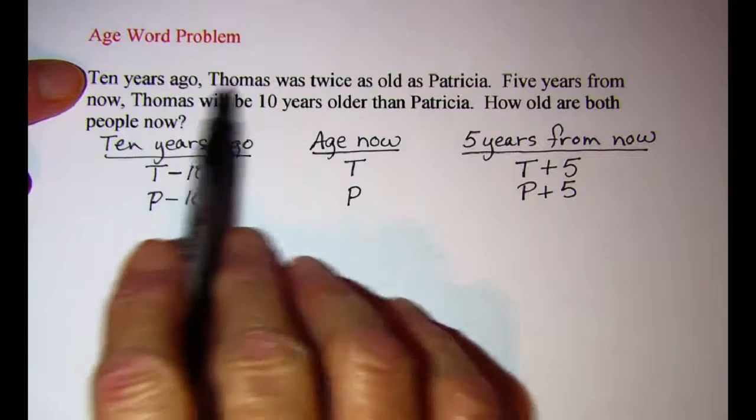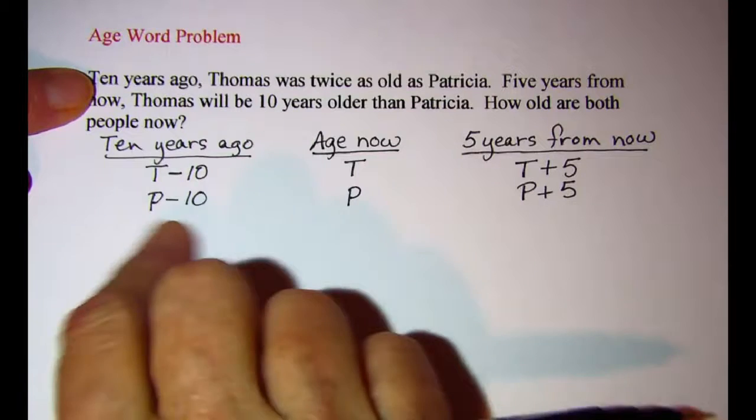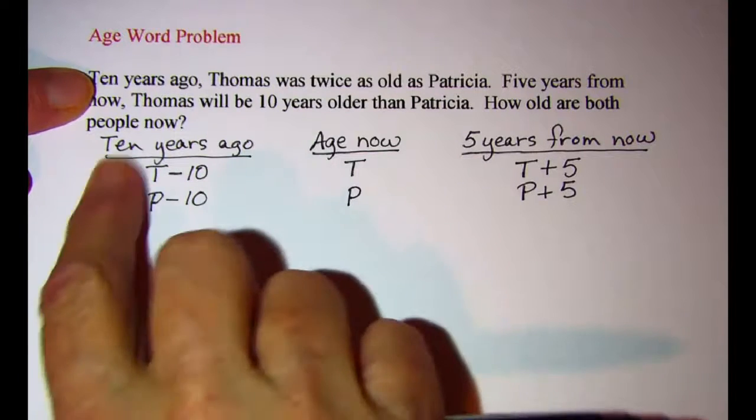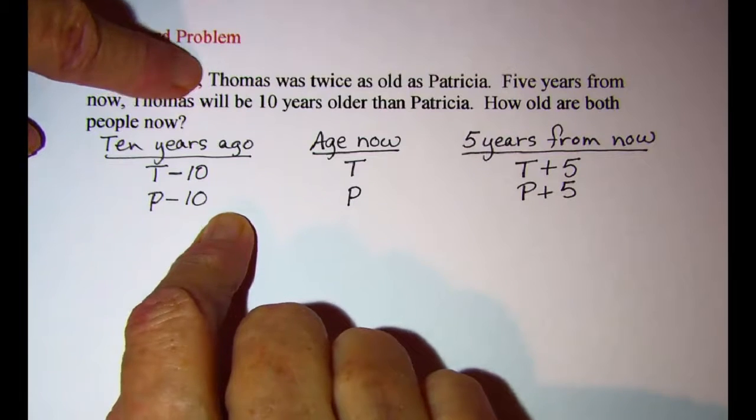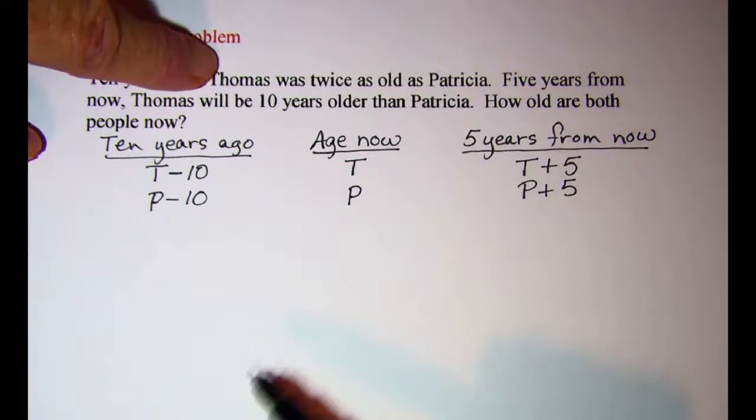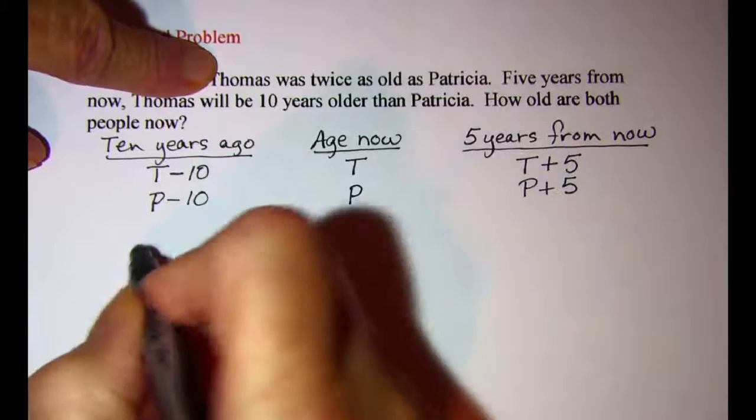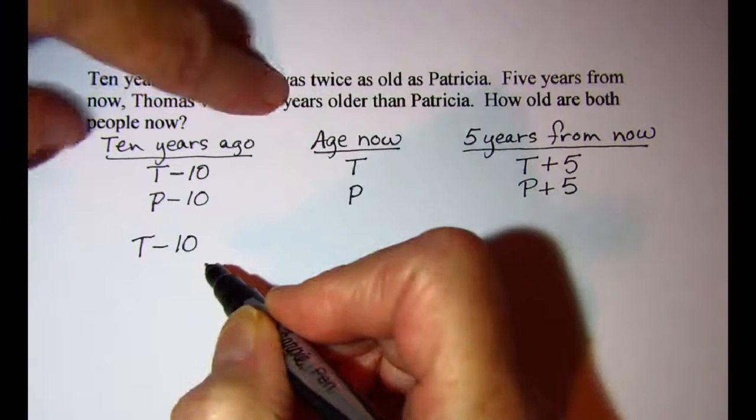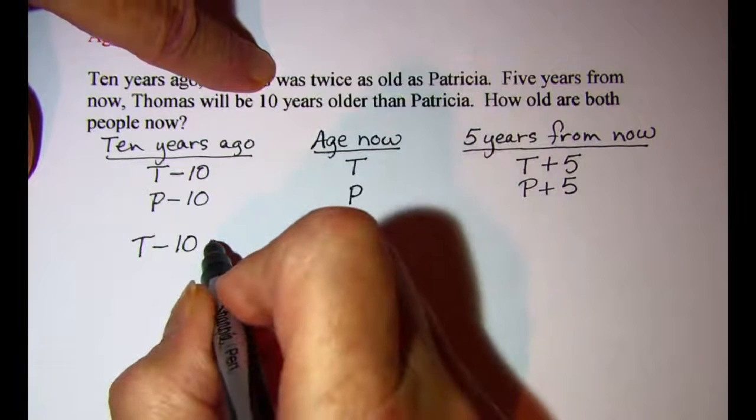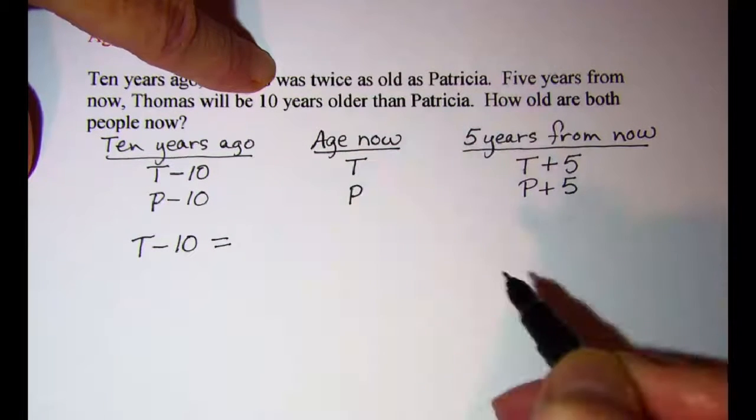This first sentence, we're talking ten years ago, so I'll just be using these expressions when it says Thomas and Patricia. So Thomas, I'll write T minus 10, was, that's our verb, so that's where the equals goes.